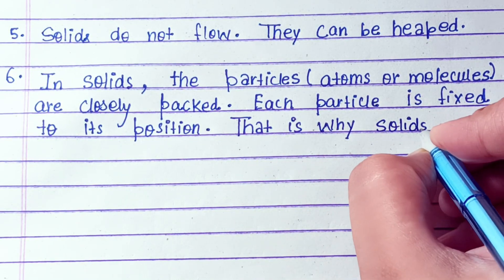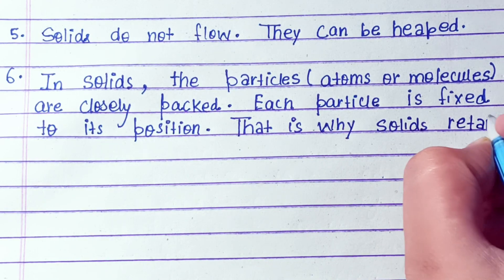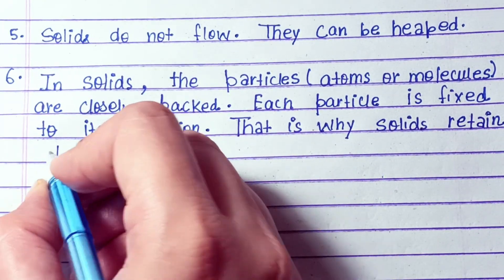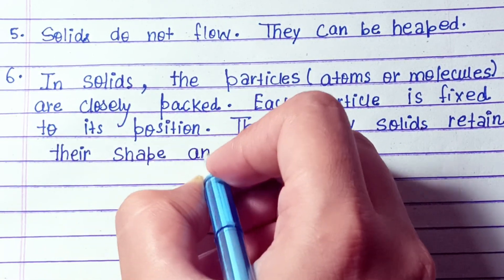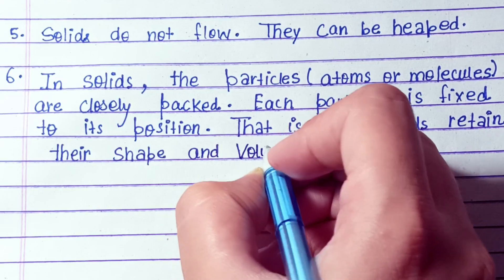In solids, the particles—atoms or molecules—are closely packed. Each particle is fixed to its position. That is why solids retain their shape and volume.